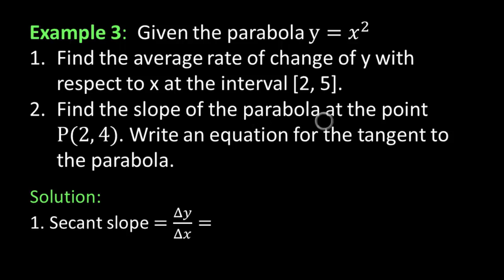Number 2: find the slope of the parabola at the point (2, 4). So if it's at a point, what do you think we're going to do? We're going to find the instantaneous rate of change at x equal to 2. This is the same thing as your instantaneous speed. It's going to be the slope of the line tangent to the curve at this particular point. For part 1, we'll get the slope of the secant line that joins the two points when x equals 2 and when x equals 5. So we're getting a secant line here, and a tangent line there.